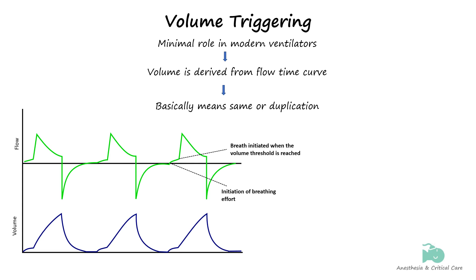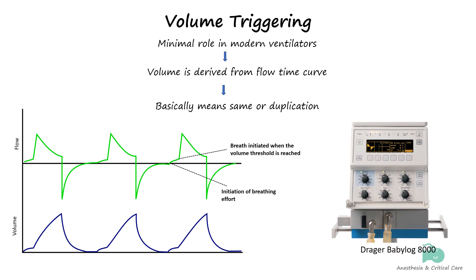By the same logic, any flow triggering is also technically volume triggering because some volume must change as the result of a change in flow, as we can appreciate from the graphic given. In summary, volume triggering represents a pointless duplication of flow triggering. Of existing machines, the Draeger Baby Log appears to be the only ventilator which offers volume triggering as an option.